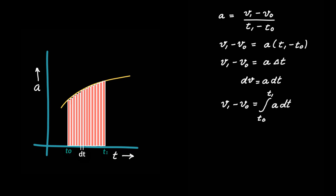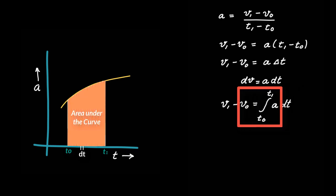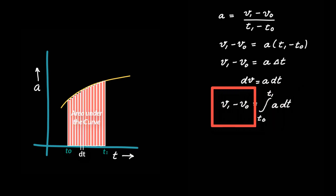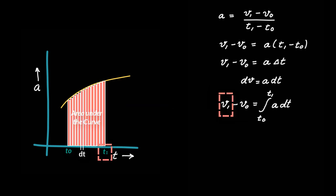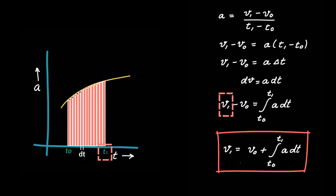This equation says that if you integrate the function a between time t0 and t1 on an acceleration-time graph, then this gives you the value of area under the curve, and this is the change in velocity in that time interval. Remember: the area under the curve between two times represents the change in velocity and not the velocity itself at any time. But if you wish to find the velocity at the end of the time interval, that is at t1, you can use the same equation but take v0 to the right-hand side — then this becomes your formula for velocity at time t1.